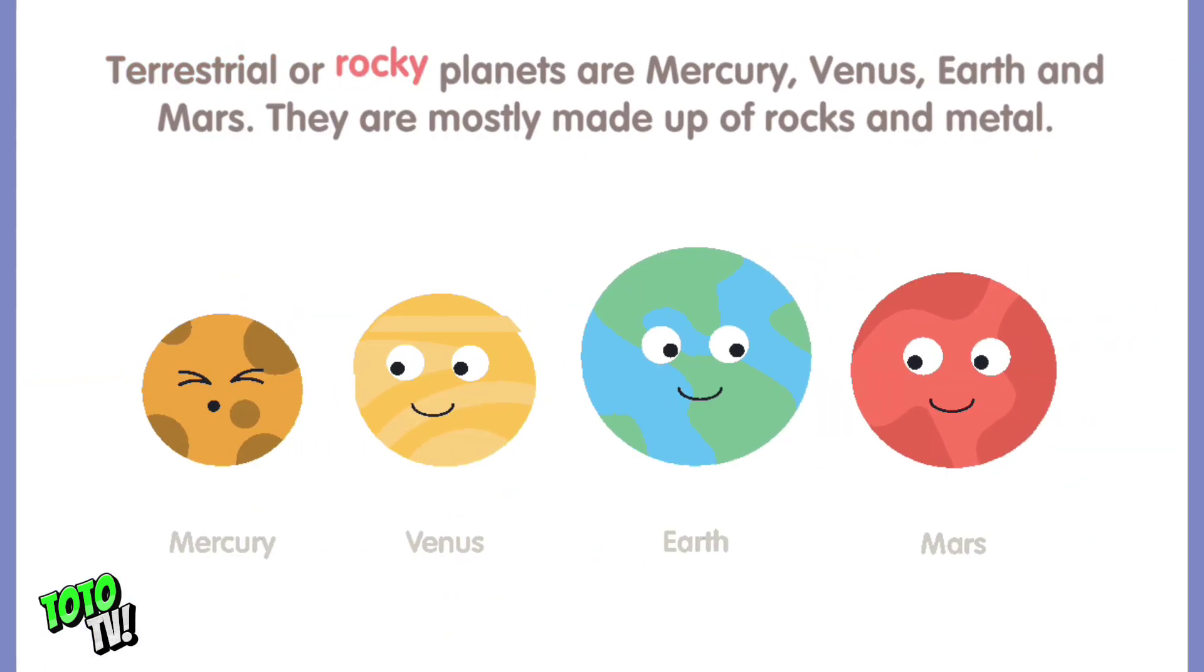Terrestrial or rocky planets are Mercury, Venus, Earth, and Mars. They are mostly made up of rocks and metal.